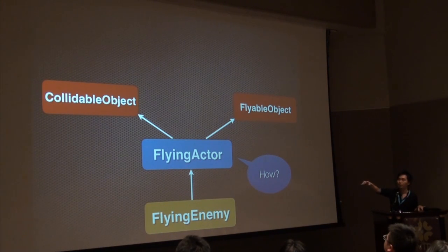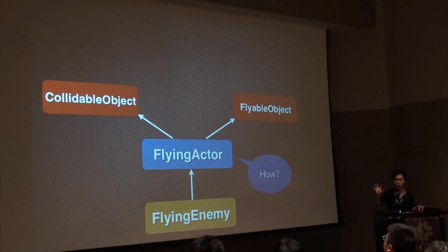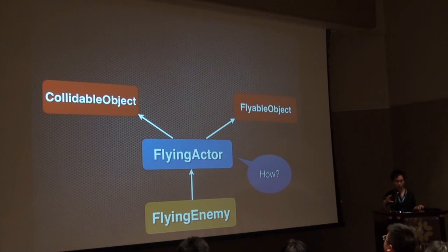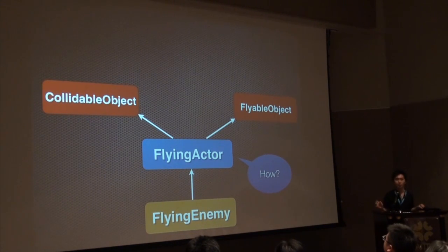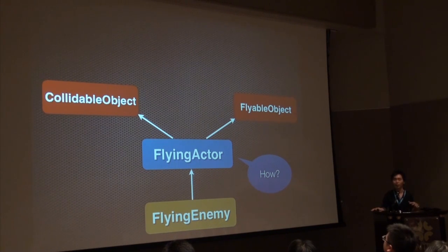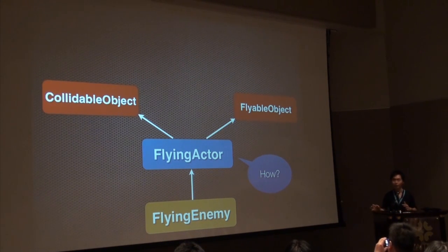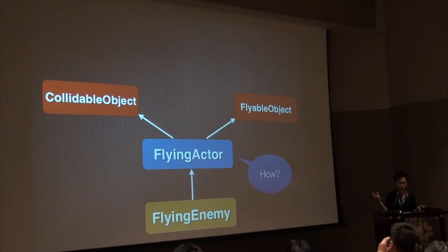另一個解法就是再把Actor那邊另外再做一個Flying Actor，這個Flying Actor其實跟Actor很像，只是繼承的對象不一樣，他就不繼承Walkable而是只繼承Flyable跟Collidable。這兩種解法都有人做，在遊戲領域也很常見，只是都不是很好的解法。因為你做到後來就會發現特例非常非常多，組合非常多，單純的繼承架構其實是很沒有彈性的。